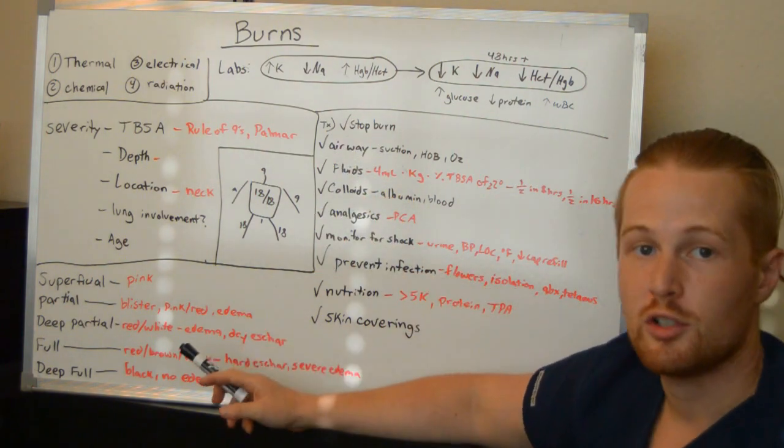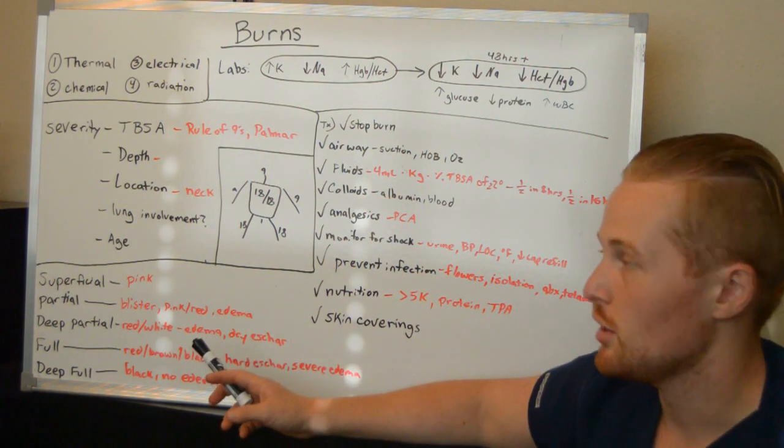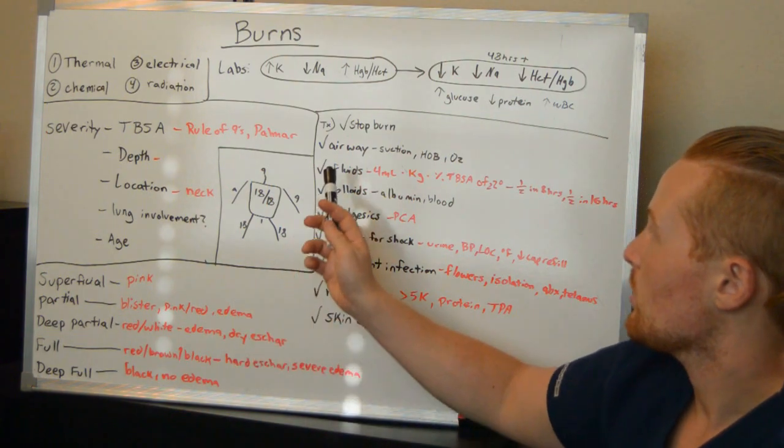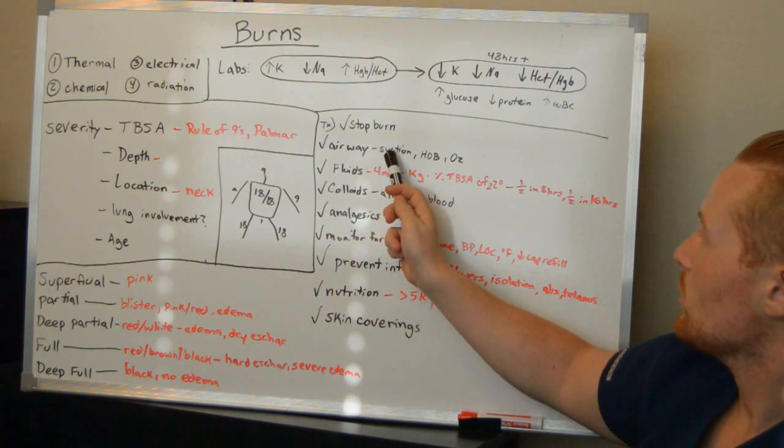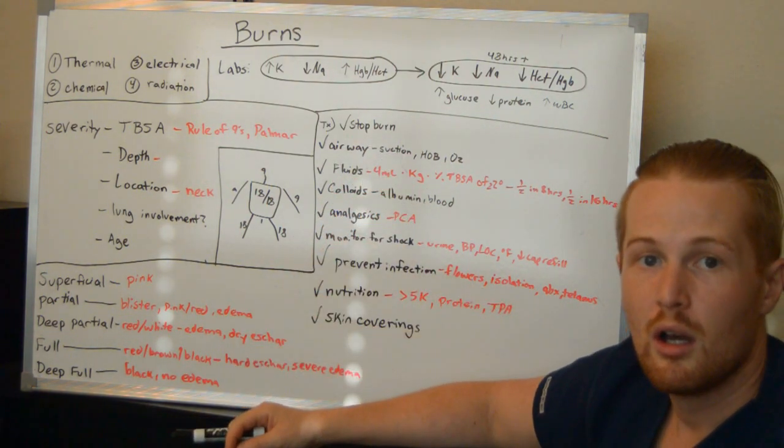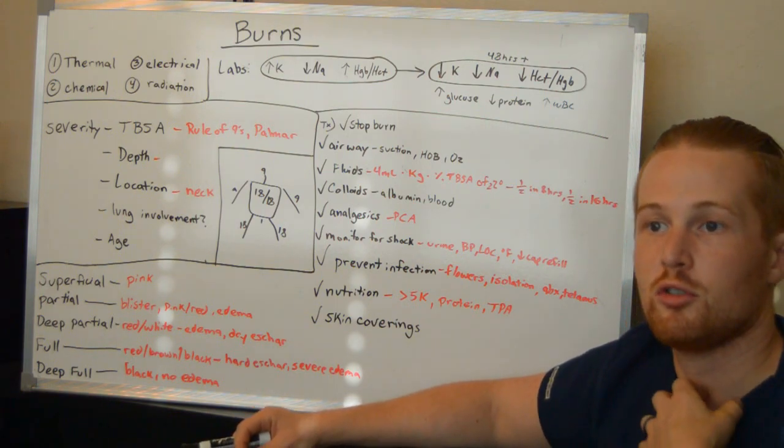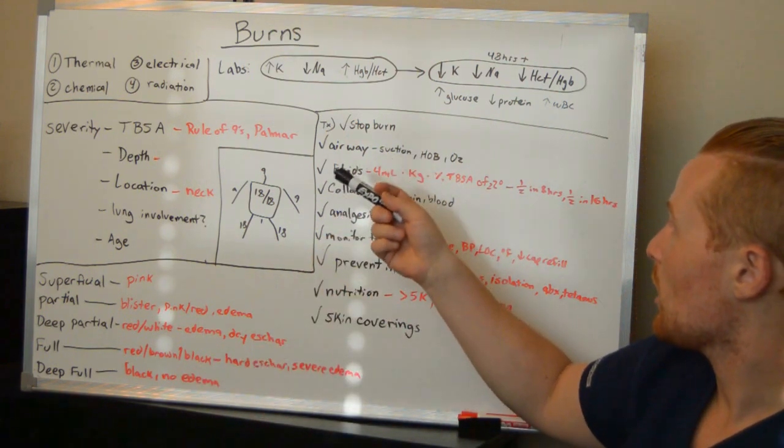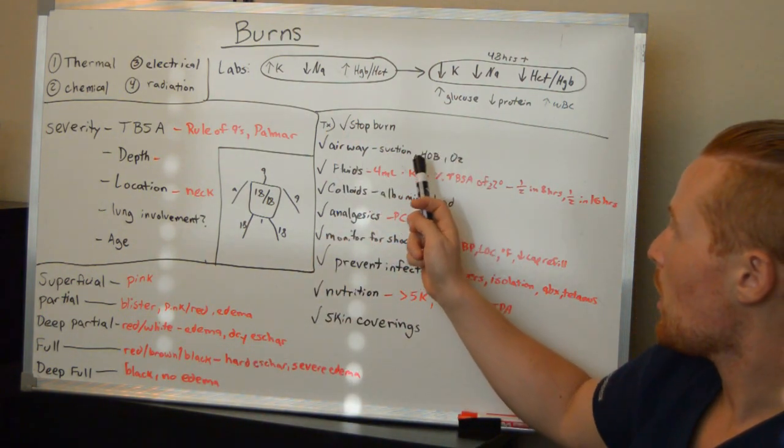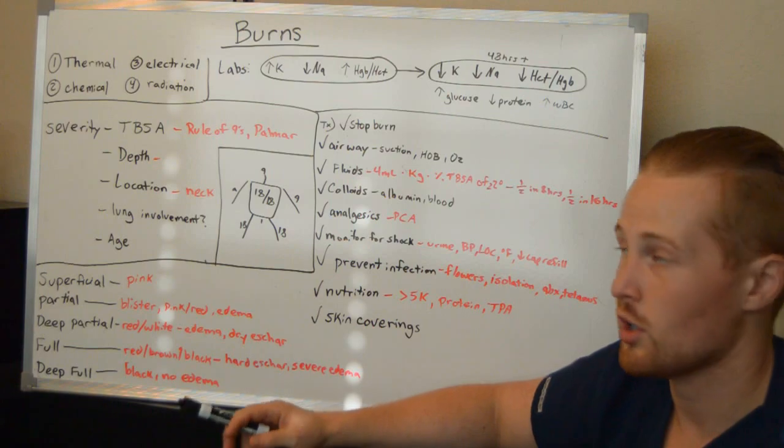You want to make sure you maintain airway because I told you there's systemic edema and that could include in the respiratory system and around the throat and the face. And so this includes making sure you suction out any fluids, especially if you have an inhalation burn. This person may be producing lots of fluids inside of their lungs. And so you want to make sure they're able to cough it up, keep the head of the bed up, give them oxygen and make sure you suction out any excretions.